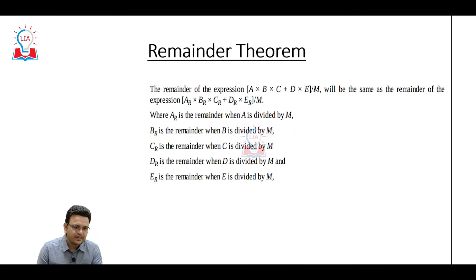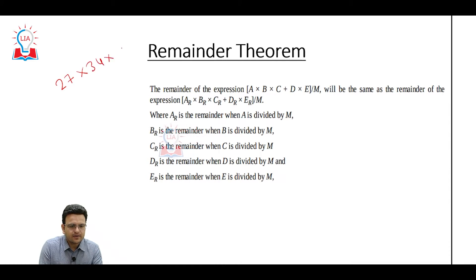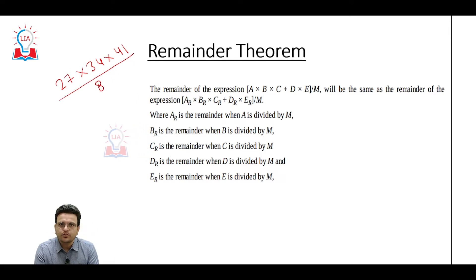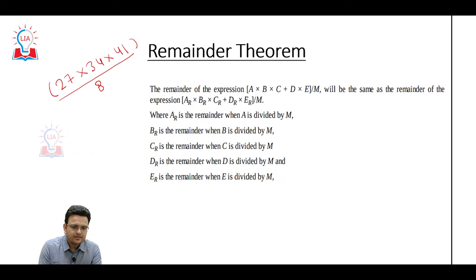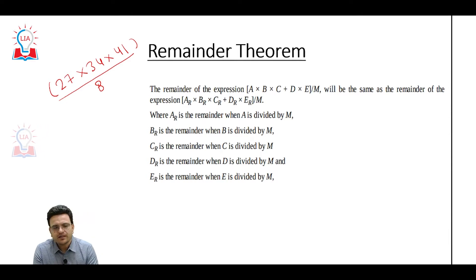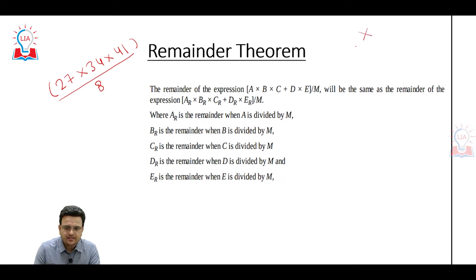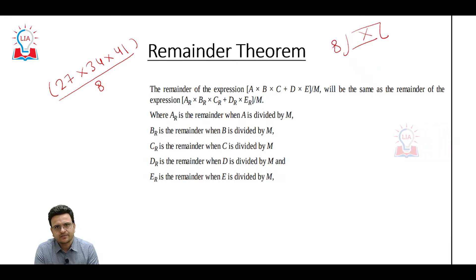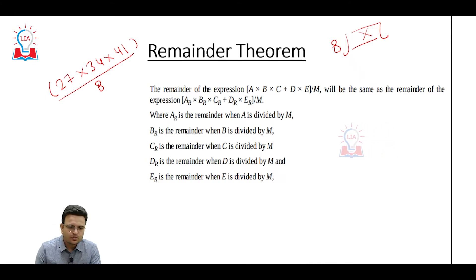Simply, if I want to divide some number — consider 27 multiply 34 multiply 41 by 8 — I have two choices. First choice: I will multiply 27 by 34, get one number, again multiply by 41, get number X, and then divide X by 8. It is a very lengthy process. Another way to solve this problem is through remainder theorem.